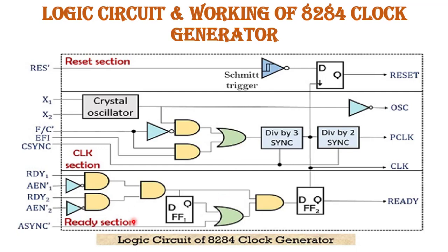The third section is the ready section. The ready section generates the ready synchronization signal. This ready signal provides information regarding whether the processor is ready for operation or not. If the ready signal is low, it indicates the wait status of the processor. The ready section takes its timing synchronization from the divide-by-3 counter of the clock section. This is the working of the logic diagram of the 8284 clock generator.